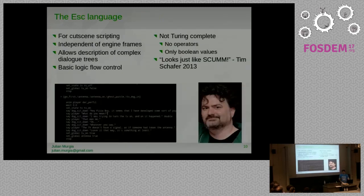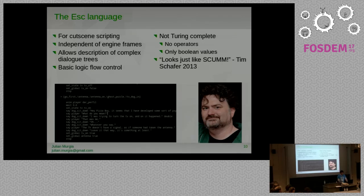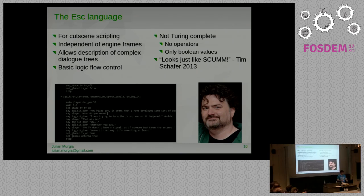About the ESC language - this is a language provided by the Escoria framework used for cutscene scripting. It's made mostly for dialogues and reactions of NPCs to player actions, and is generally the translation of the game's story. It's completely independent of the engine frames. We don't want the game designer worrying about technical stuff like how things render, whether there's enough time, or frames per second. They just do their job - the technical part belongs to the programmer.